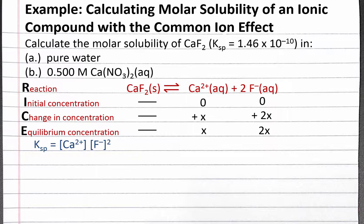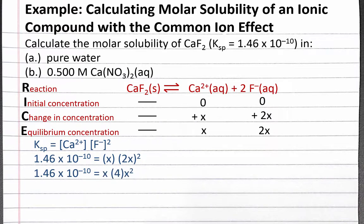So our solubility product constant expression is just the concentration of calcium ions times the concentration of fluoride ions squared. We can substitute the Ksp value given in the problem — 1.46 times 10 to the negative tenth — as well as the equilibrium concentrations from our RICE table into our Ksp expression. We need to be careful that we raise both the 2 and the x to the second power for 2x squared. Doing this, we'll get x times 4x squared, which simplifies to 4x cubed.